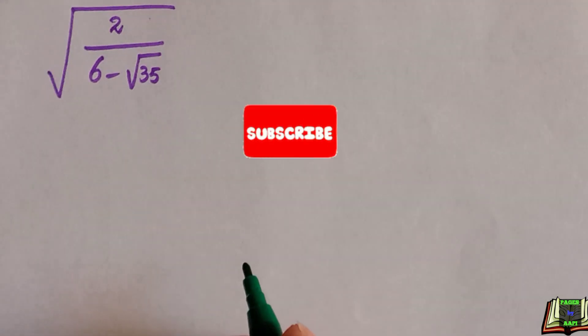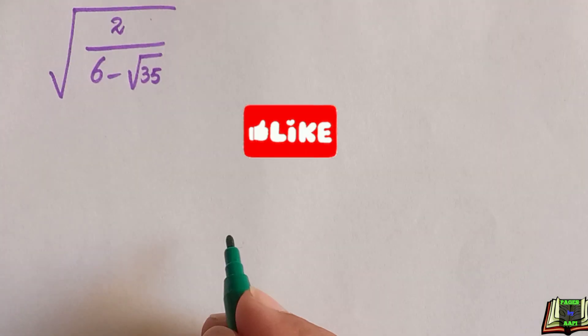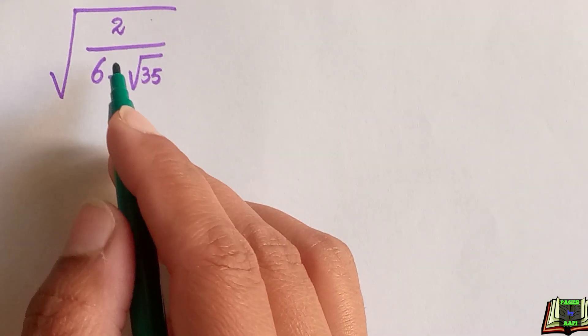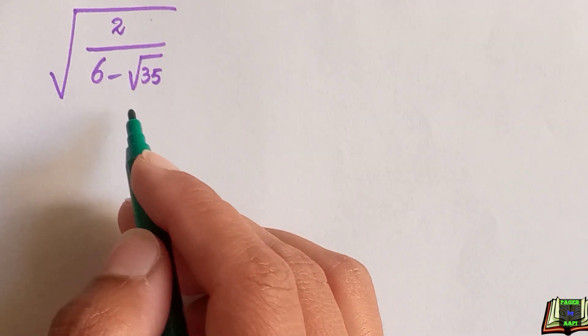Hello and welcome back. Today we have this root problem: square root of 2 divided by 6 minus root of 35. So let's get started and see each solution.